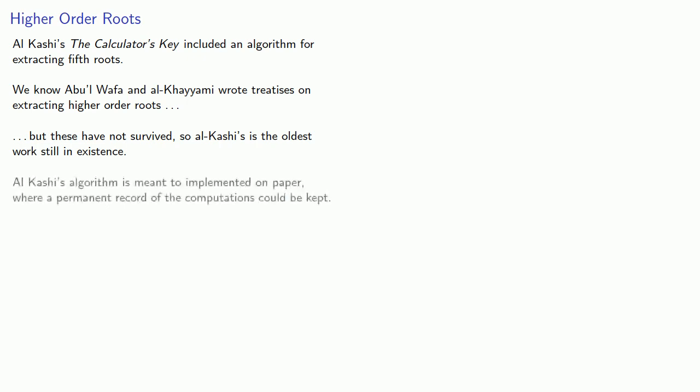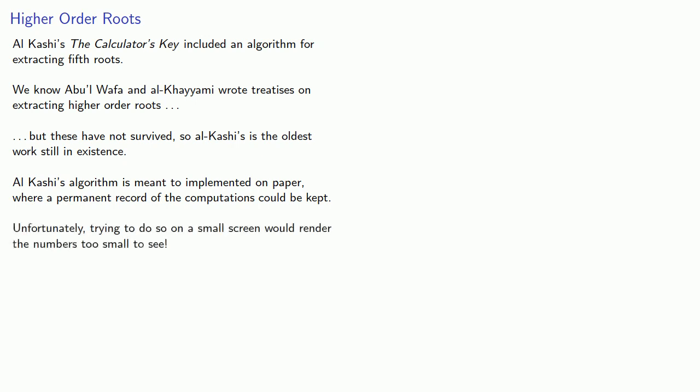Al-Kashi's algorithm is meant to be implemented on paper where a permanent record of the computations could be kept. Unfortunately, trying to do so on a small screen would render the numbers too small to see, so we'll perform the computations and replace the numbers as we find them.